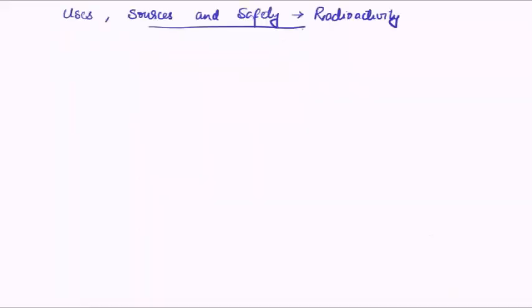Let us discuss the uses, sources and safety concerns regarding radioactivity. To begin with, what are the uses which radioactivity has been put to. We discussed in the previous lecture that atoms with atomic number greater than 82 are normally radioactive, but they are not the only elements which are radioactive. There are elements with atomic number less than 82 which can be radioactive, and such isotopes of elements are known as radioisotopes.